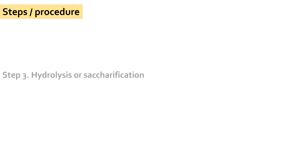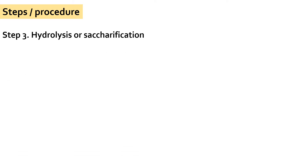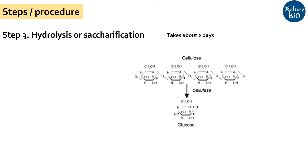The third step is hydrolysis or saccharification, which takes about two days. In this step, the pretreated biomass, which comprises mainly of polymeric cellulose, is broken down to simple sugars like glucose by cellulase enzyme.